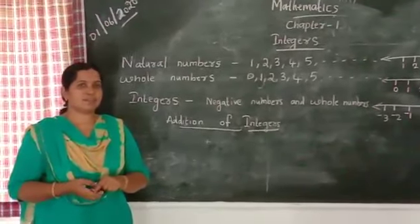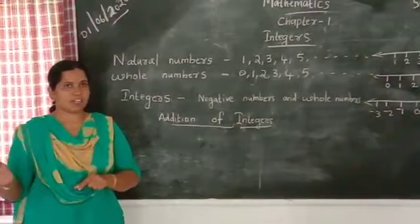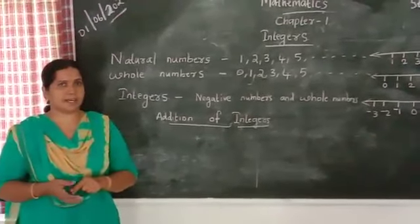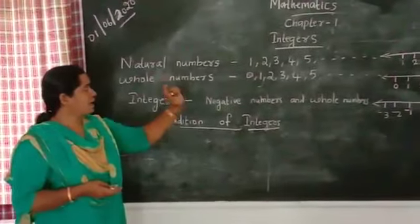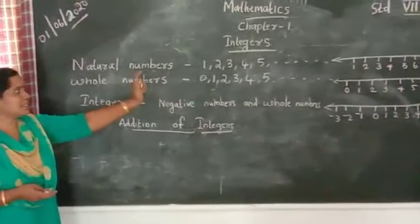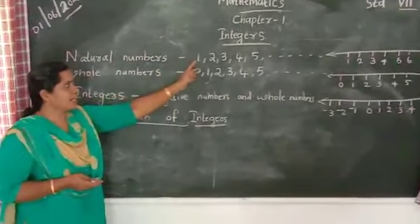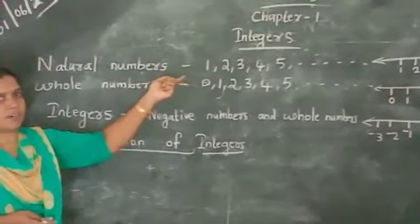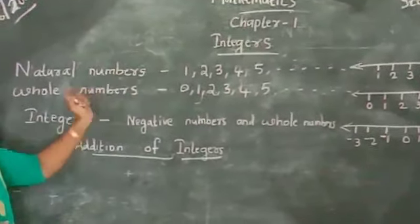You have been learning numbers from childhood by counting your toys: 1, 2, 3, etc. After that, you learned natural numbers. Natural numbers are numbers starting from 1 and they extend to infinity, because we do not know what the last number is.